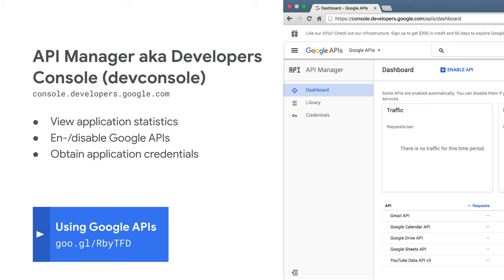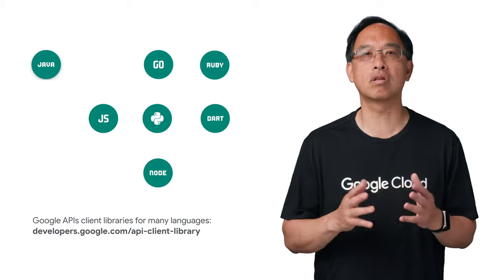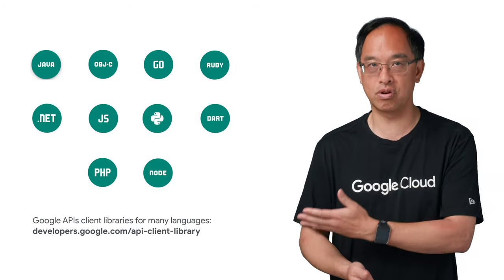You can access the API manager directly at console.developers.google.com. To access Google APIs, we recommend using our client libraries. We'll demo in Python and JavaScript, but many other languages are supported, and all of the client libraries can be downloaded from the link that you see on screen. Before getting started, heads up — there are two types of APIs: simple and authorized.